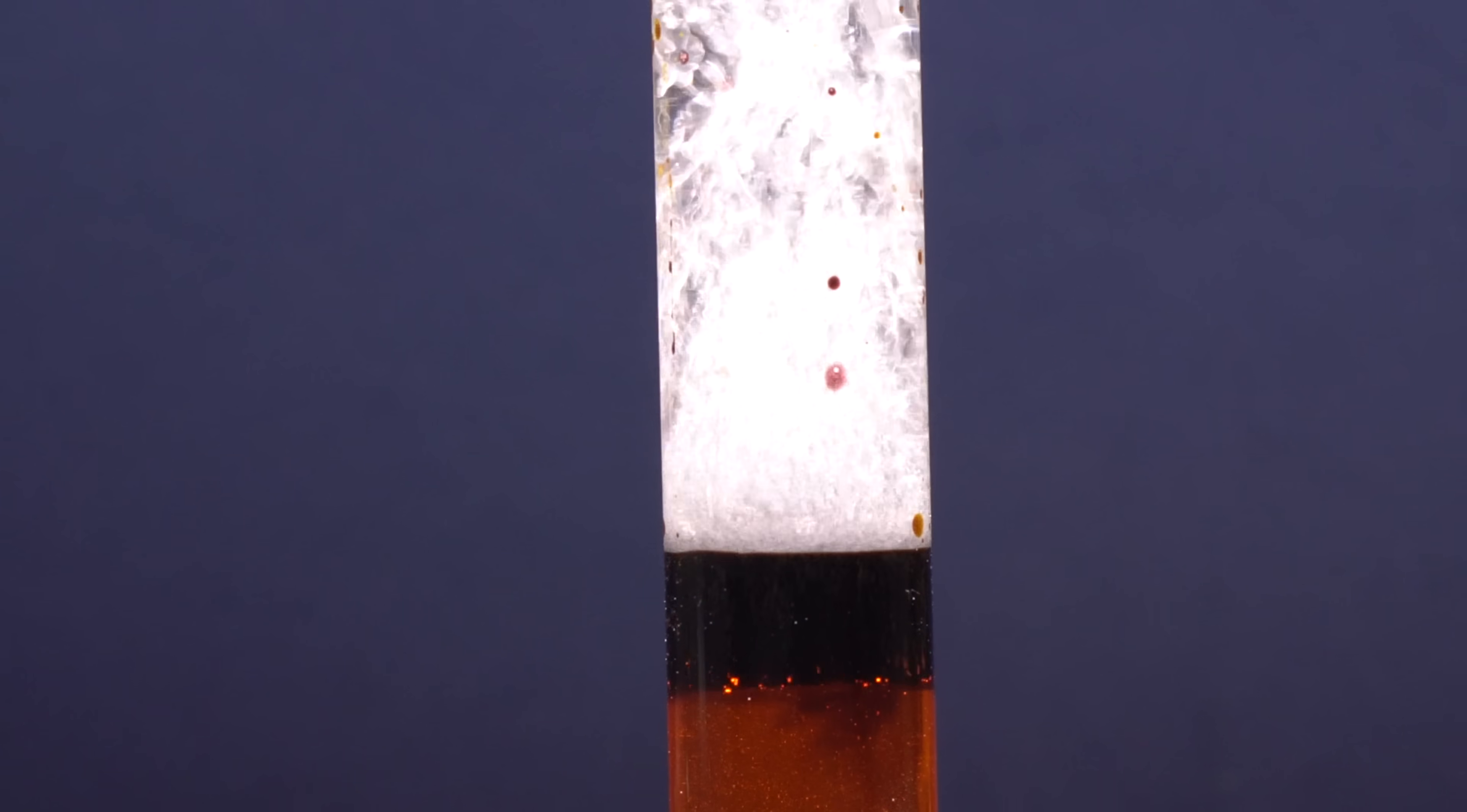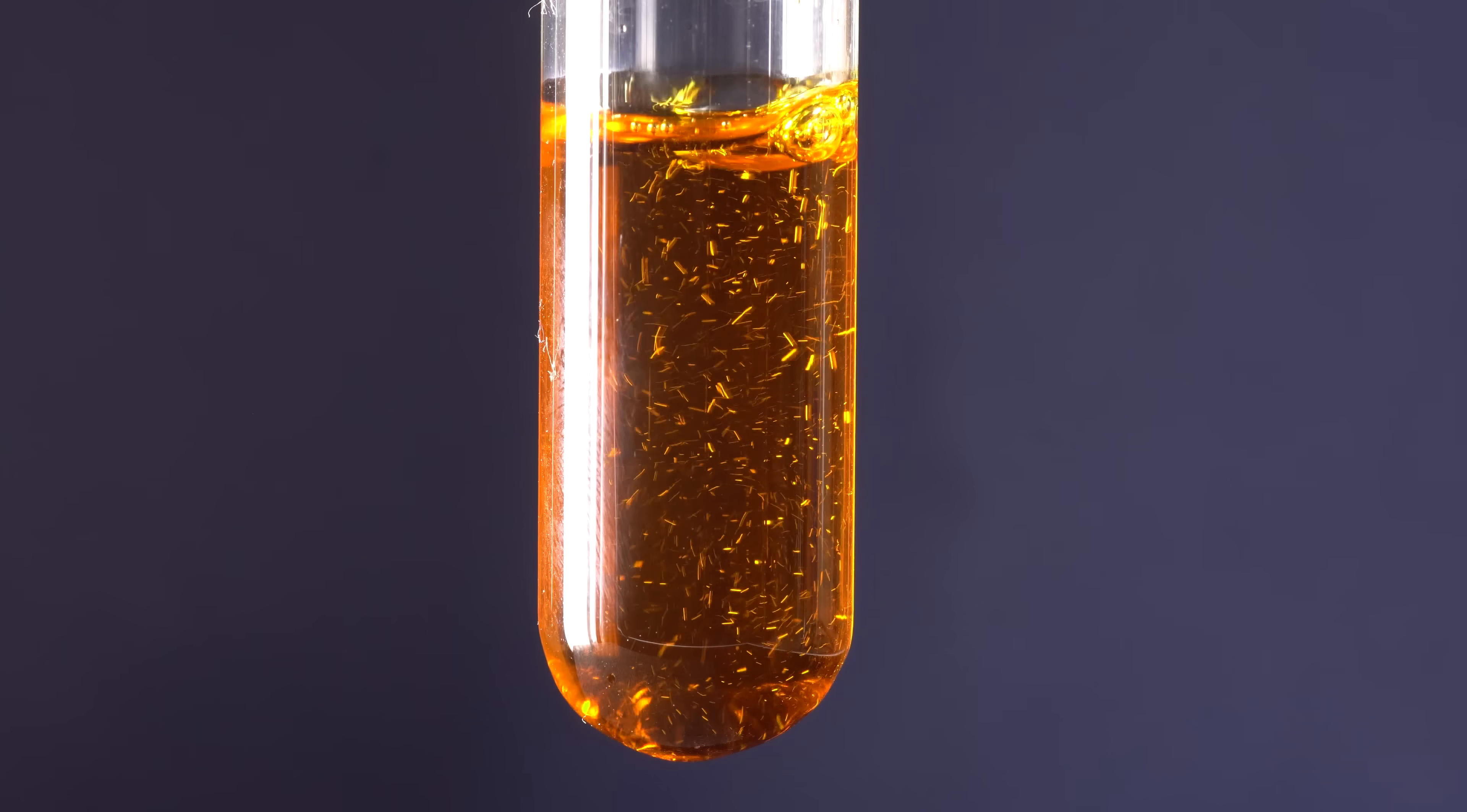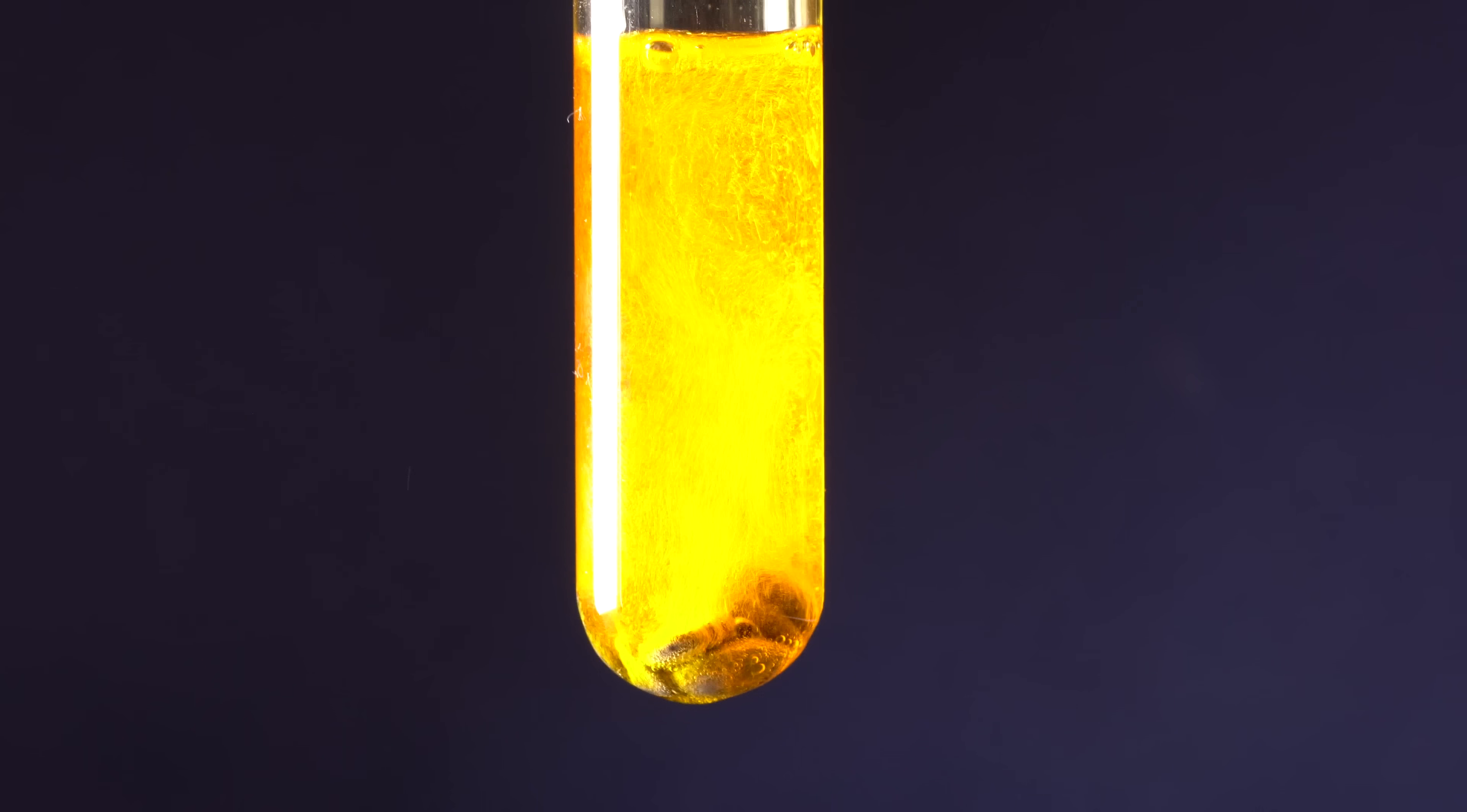In addition to the trivalent compounds, chromium can also have divalent compounds, for which we will now conduct another experiment. Let's take a test tube and pour a solution of potassium dichromate in hydrochloric acid into it. Then, we will add a few granules of zinc into the tube.